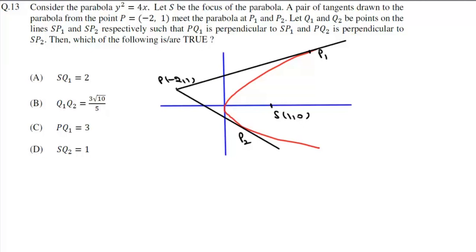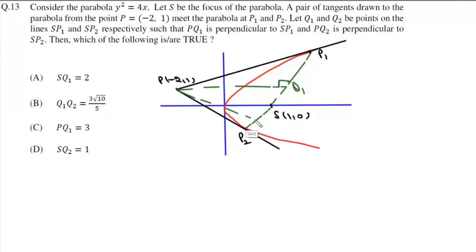We join S to P1 and S to P2. Q1 and Q2 are points on lines SP1 and SP2 such that PQ1 is perpendicular to SP1. So from P we drop perpendiculars — this point is Q1 and this perpendicular gives Q2. Now we will take points P1 and P2 in terms of parametric coordinates.